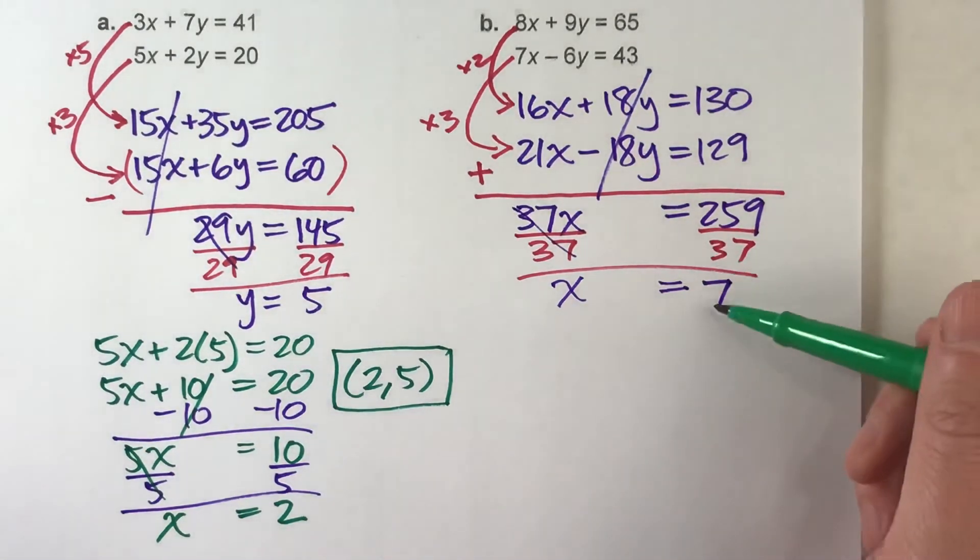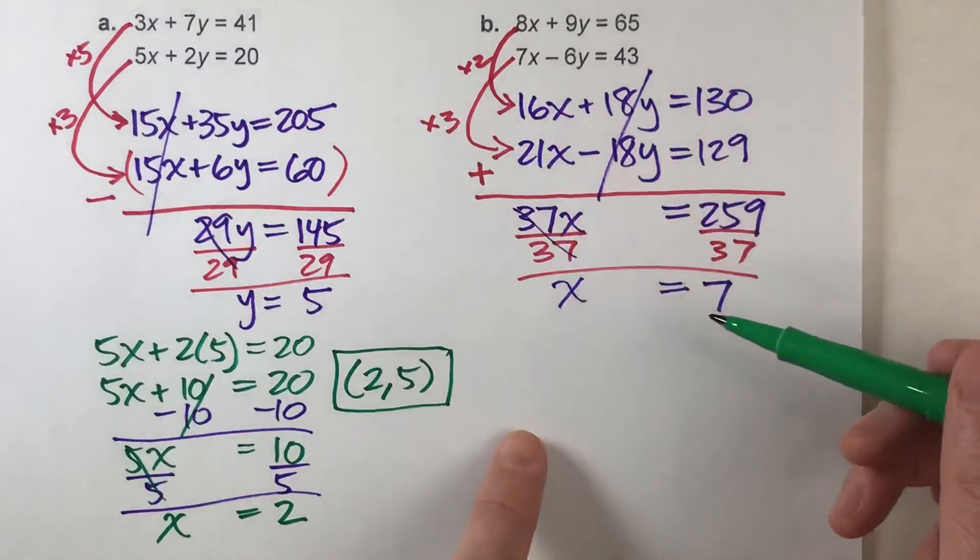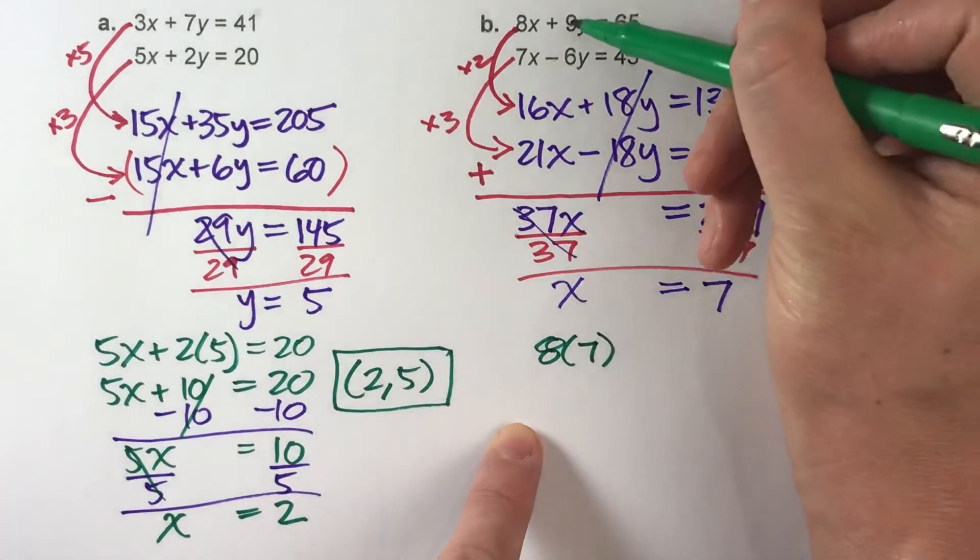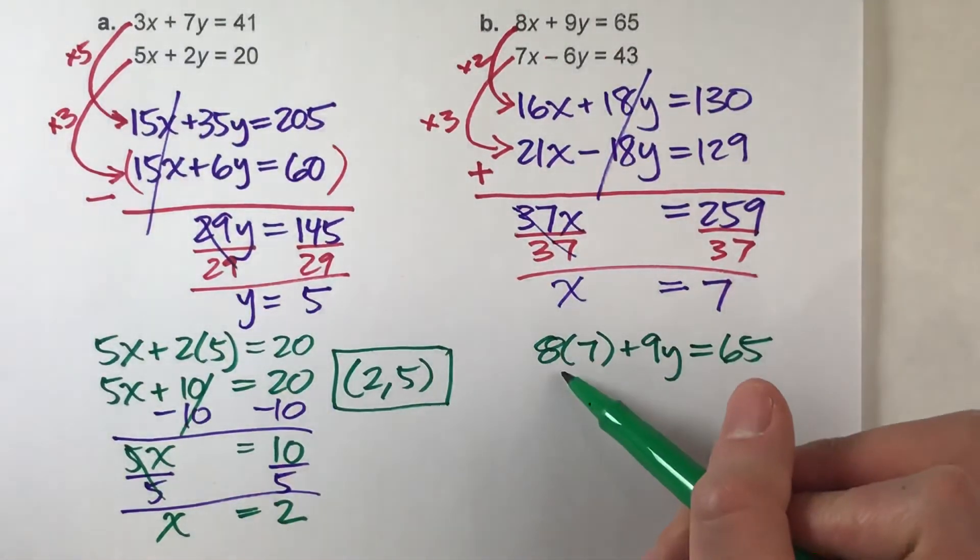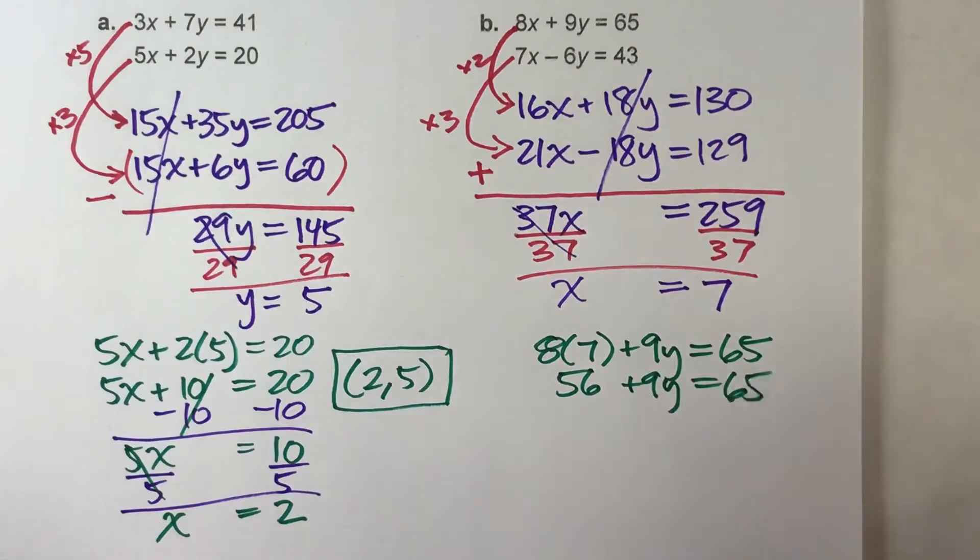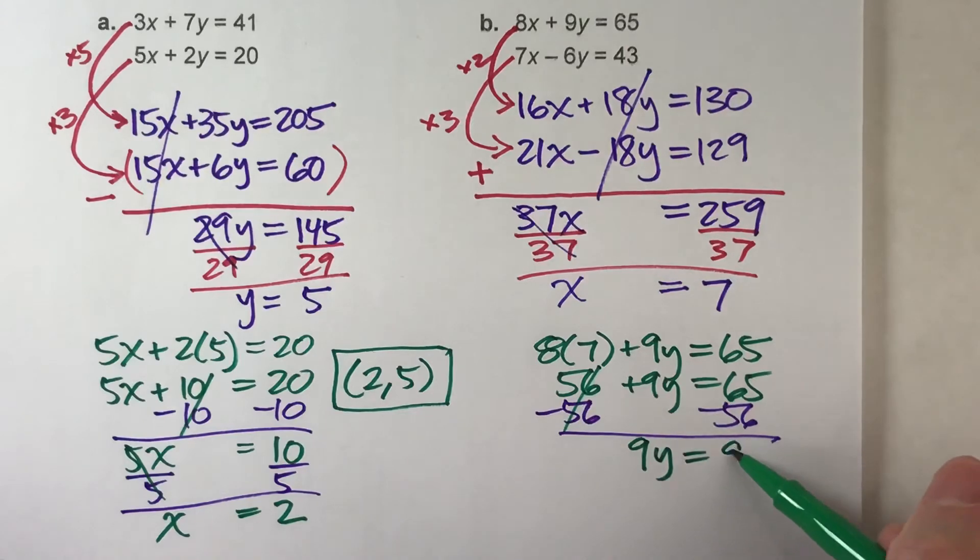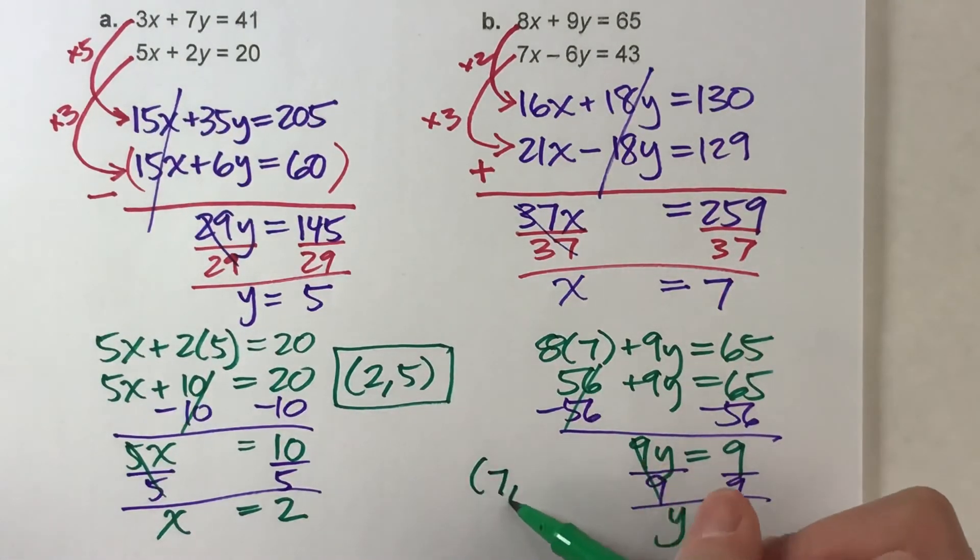Now to get y, take our x, put it back into one of the original problems. I'm going to pick the first one. So instead of 8 times x, I'm going to do 8 times my value of x, which is 7, plus 9y equals 65. And this simplifies to just 56 plus 9y equals 65. I'm going to subtract 56 on both sides. When I do that, I get 9y equals 9. Almost there. Divide both sides by 9, I end up getting y equals 1. So there's my solution: x is 7, y is 1.